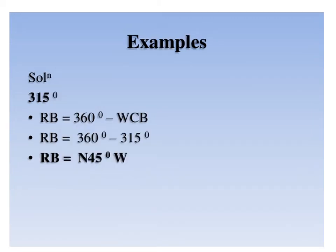For WCB of 315 degrees, the line lies in the fourth quadrant. We calculate the angle by subtracting WCB from 360 degrees: 360 minus 315 equals 45 degrees. We attach the quadrant, so the reduced bearing is N 45 degrees west.